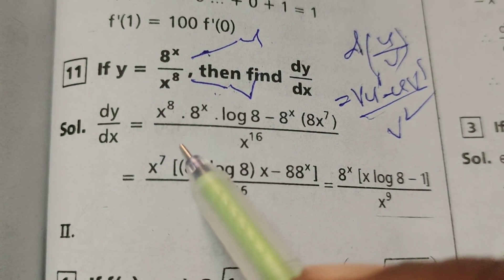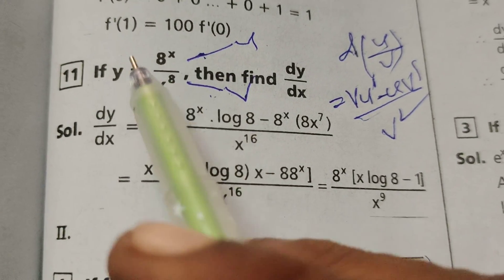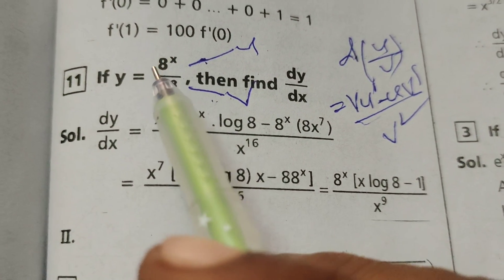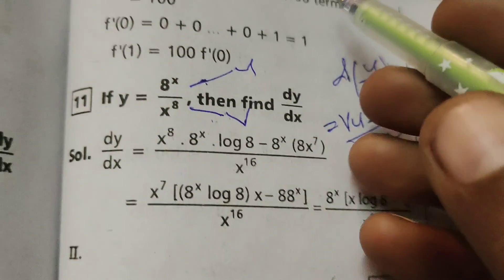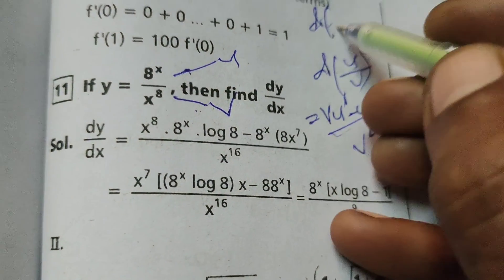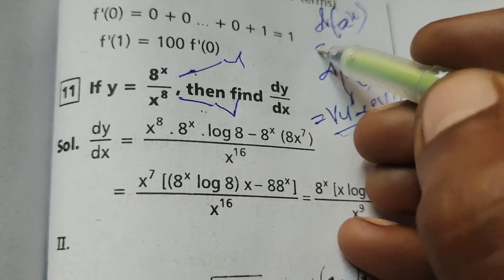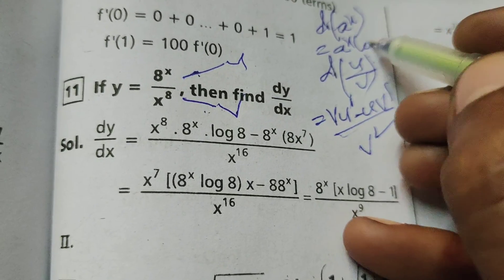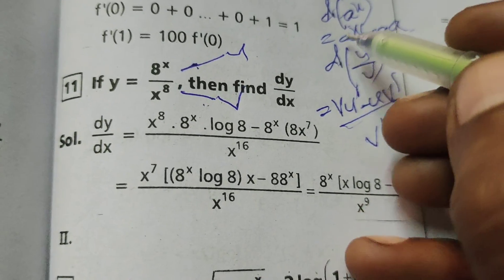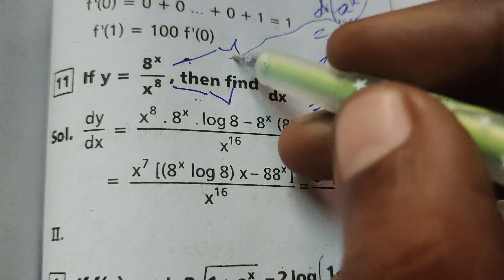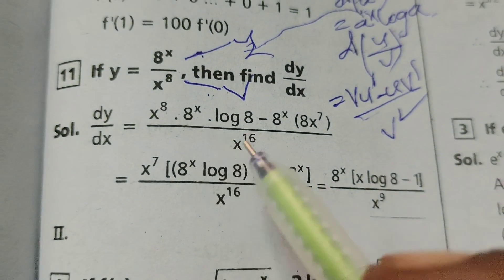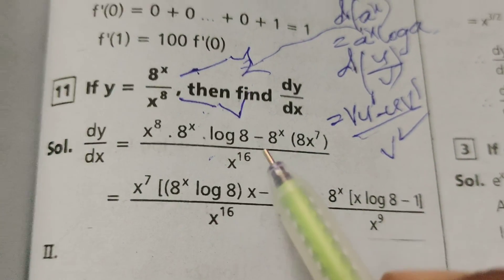Therefore, x power 8 into differentiation of u dash. Differentiation of a power x, we know that differentiation of a power x is a power x log a. Using the same formula here, 8 power x log 8. Here a means 8, minus,